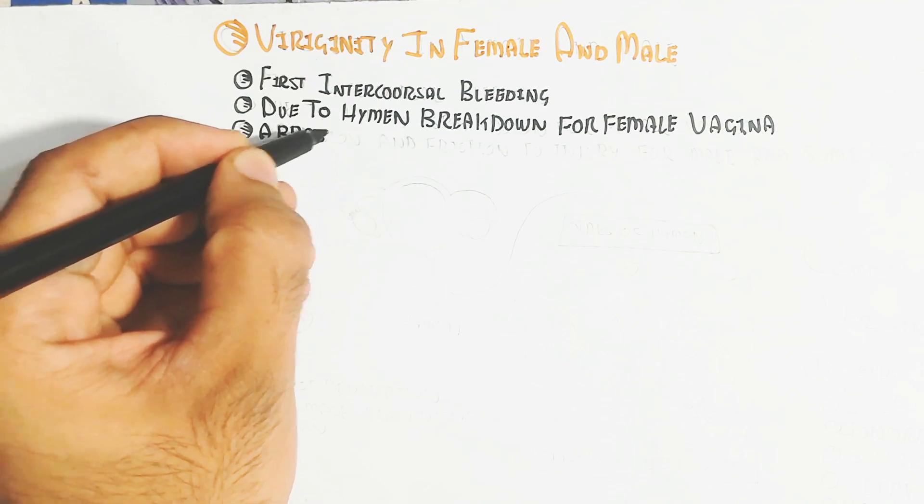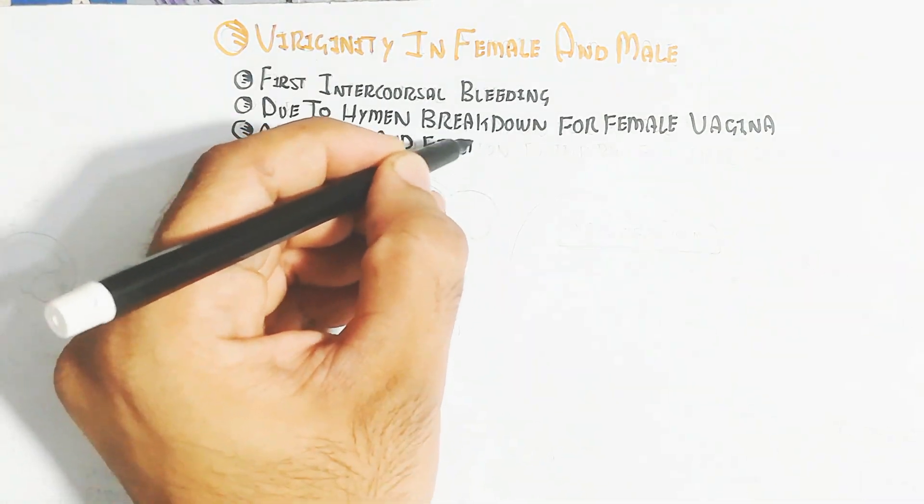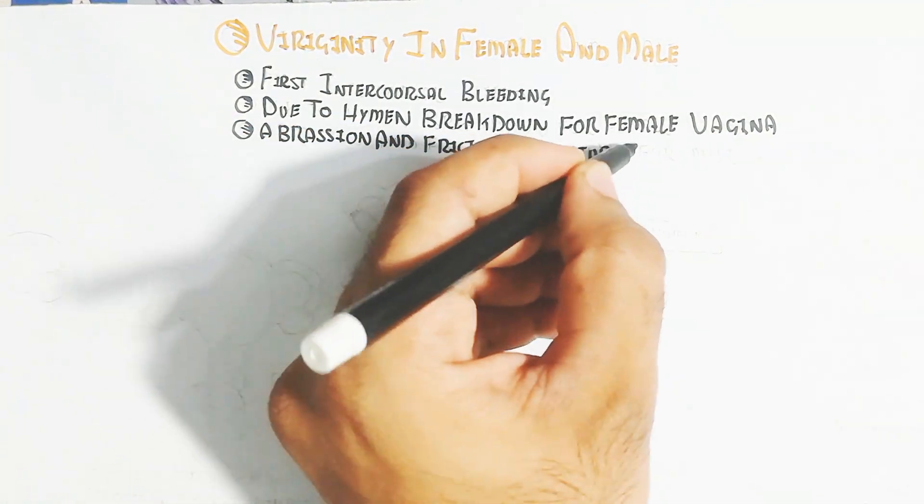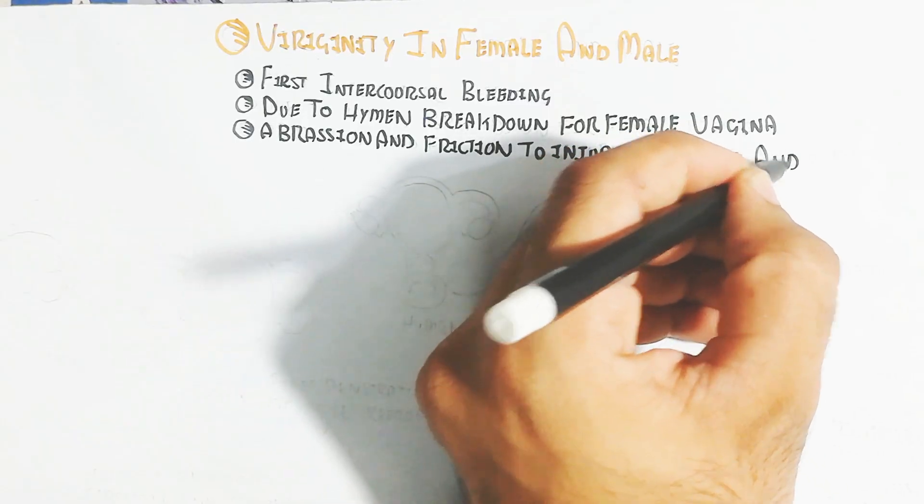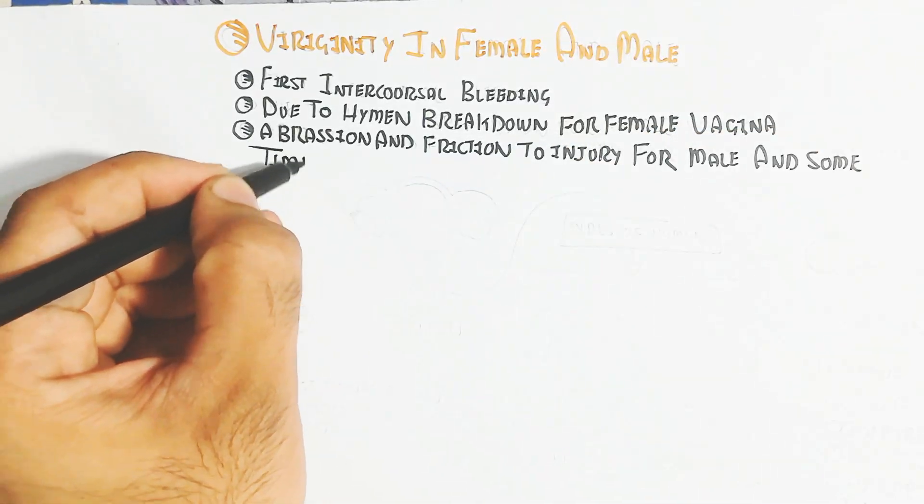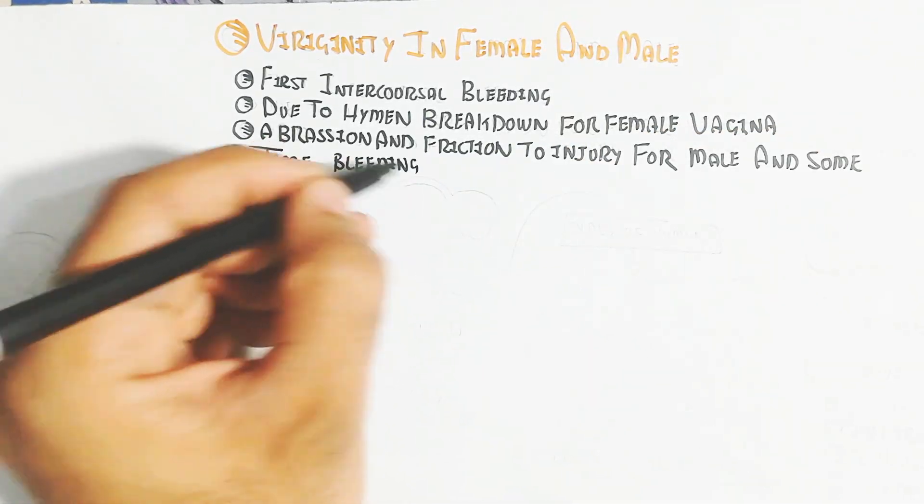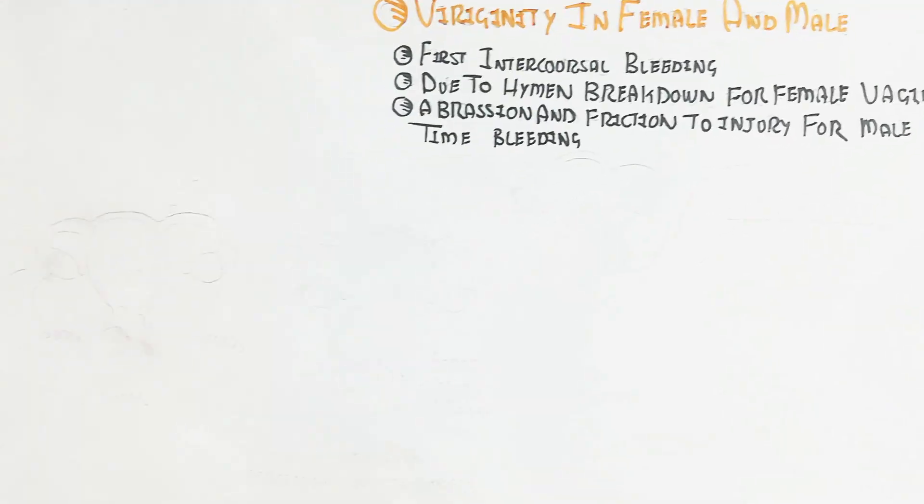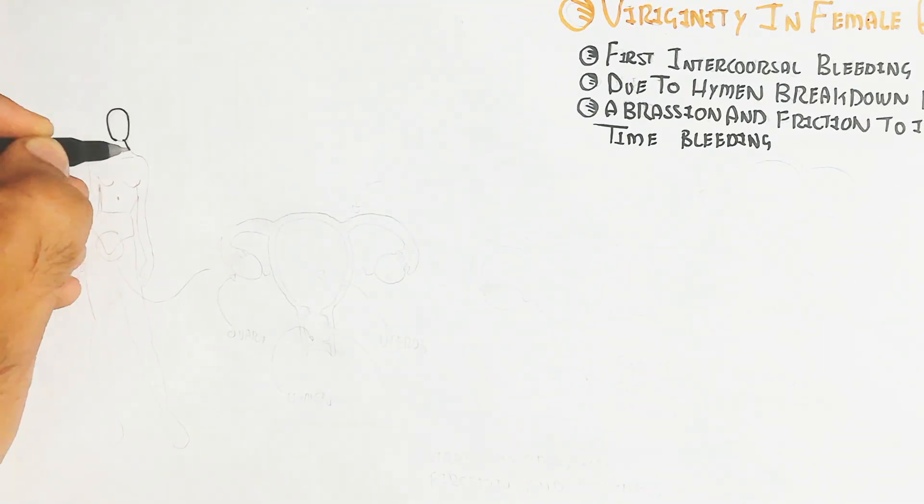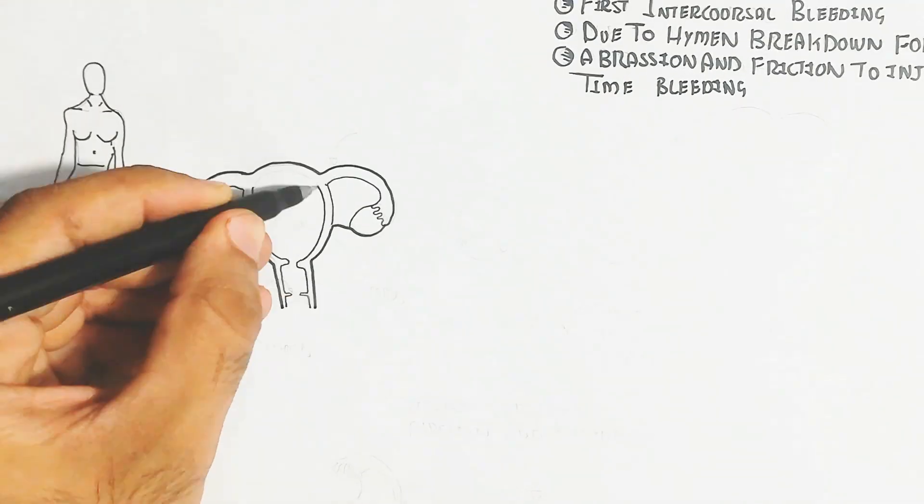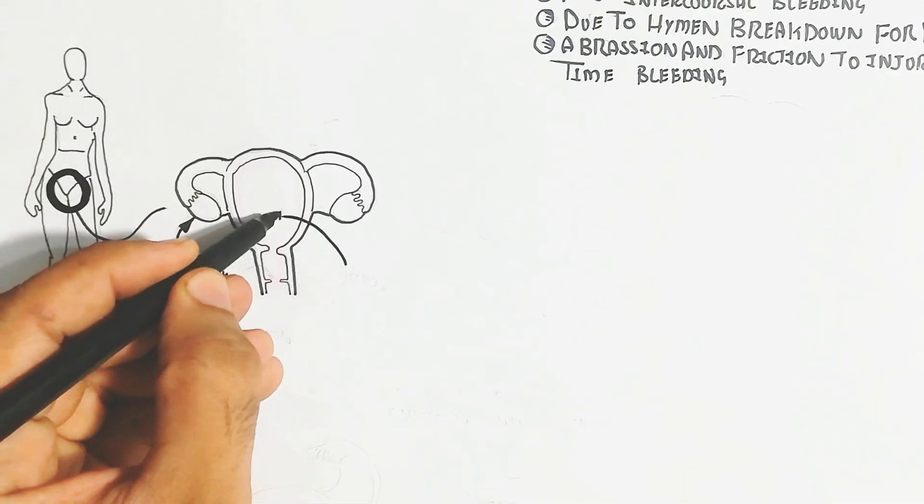Abrasion and friction can cause injury for males and sometimes bleeding. If the male has not masturbated, it can show signs and symptoms of male virginity, otherwise it will not show. It's important to note that virginity for females is very important.